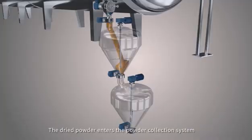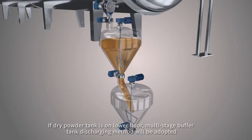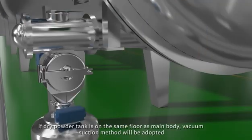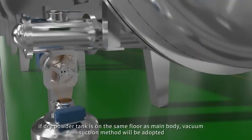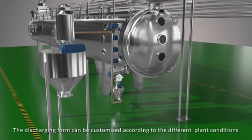The dried powder enters the powder collection system. The discharge tank has the functions of heat preservation, heat tracing, and mixing. If dry powder tank is on lower floor, multi-stage buffer tank discharging method will be adopted. If dry powder tank is on the same floor as main body, vacuum suction method will be adopted. The discharging form can be customized according to different plant conditions.